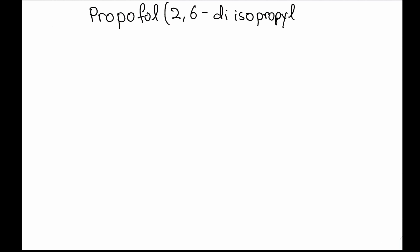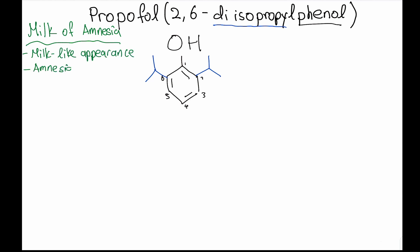Propofol's chemical structure is also known as 2,6-diisopropylphenol. As the name states, it contains a phenol group and two isopropyl groups at the carbon positions of 2 and 6 in the structure. It is also known as the milk of amnesia due to its milk-like appearance and its amnesia properties.